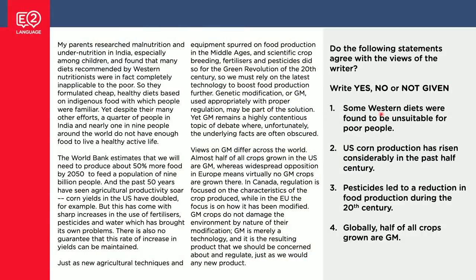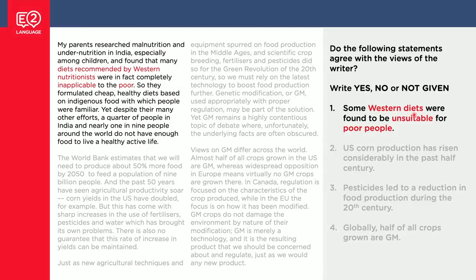Are you feeling confident with your answers? Let's have a look together. Let's start with question one. We've got a really good scanning word here with a capital letter: Western diets, unsuitable, poor people. You can find this in the first paragraph — Western nutritionists, inapplicable, and poor. In the real test, you'd slow down and read this section really carefully. Many diets recommended by Western nutritionists were in fact completely inapplicable to the poor. The question asks: were some Western diets found to be unsuitable for poor people? Does the text say the same thing? Yes — many diets recommended by Western nutritionists were completely inapplicable to the poor. This is the same thing, so this is YES.